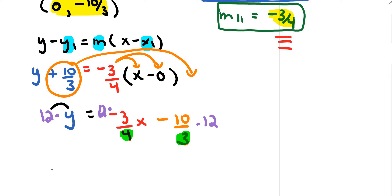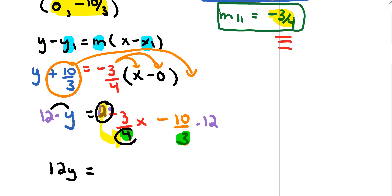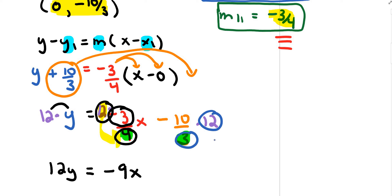12 times y is 12y. For the x term: 12 divided by 4 is 3, and 3 times negative 3 is negative 9, giving negative 9x. For the constant: 12 divided by 3 is 4, and 4 times negative 10 is negative 40.